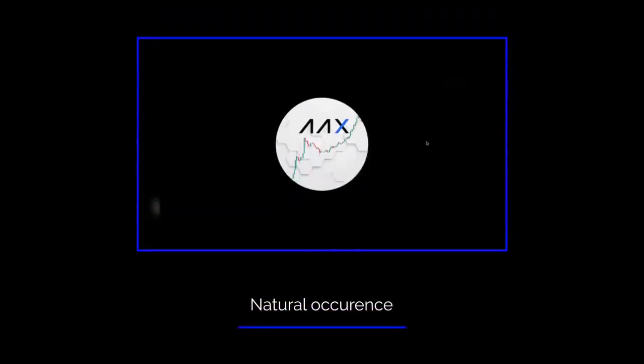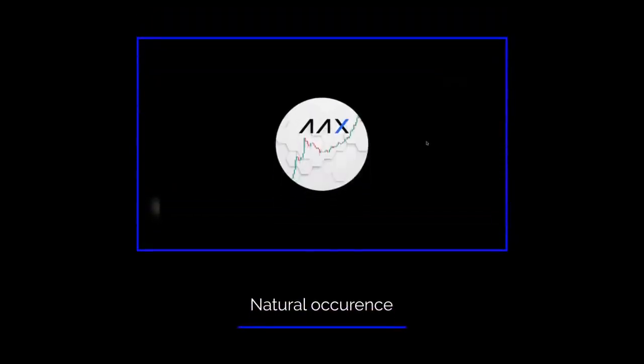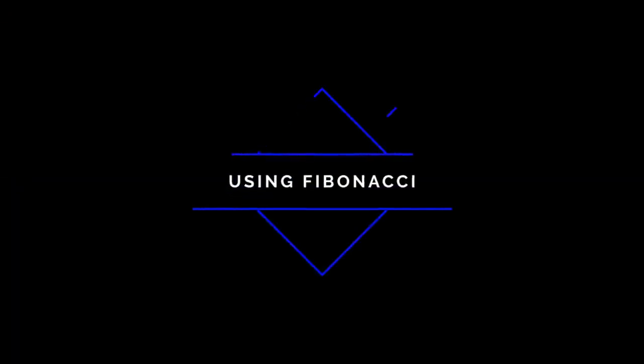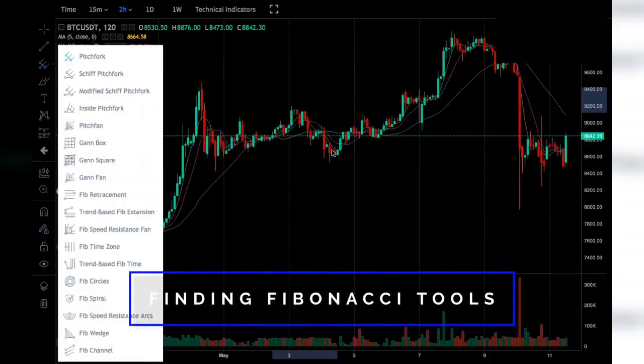Why do traders use Fibonacci? The Fibonacci ratio is seen all around the world — an example of this is Leonardo da Vinci's Vitruvian Man or the nautilus shell. Due to the exponential occurrence of the divine proportion in the natural world, traders believe that the Fibonacci ratio is also applicable to trading.